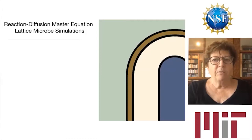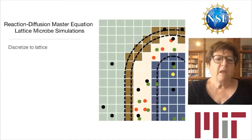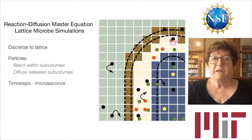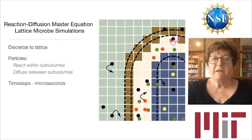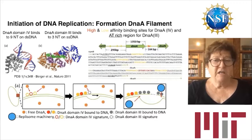Particles are placed from various omics experiments. We discretize the space to a lattice, and within each lattice site, particles can either react or diffuse to another lattice site. Time steps are typically microseconds. The state of the cell at each time point is defined by the particle count in each sub-volume. Let's begin with initiation of DNA replication, one of the key genetic information processing reactions.